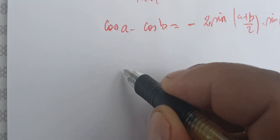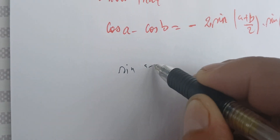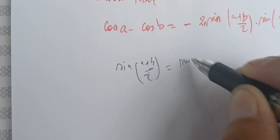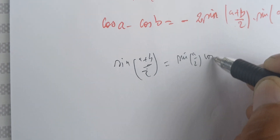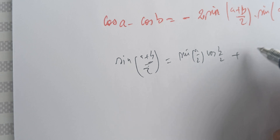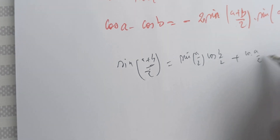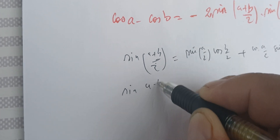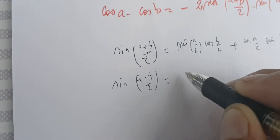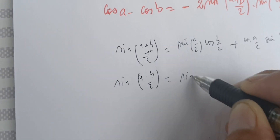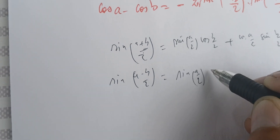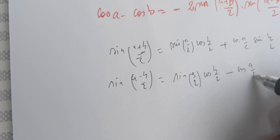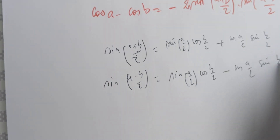We know that sine of (a+b)/2 equals sine(a/2)·cos(b/2) plus cos(a/2)·sine(b/2). Similarly, sine of (a-b)/2 is almost the same, except we have sine(a/2)·cos(b/2) minus cos(a/2)·sine(b/2).